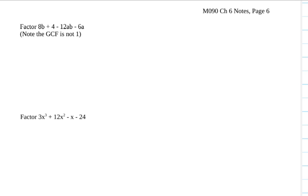Alright, here are some more examples of factoring by grouping. On this one, you'll note that it says the greatest common factor is not 1.